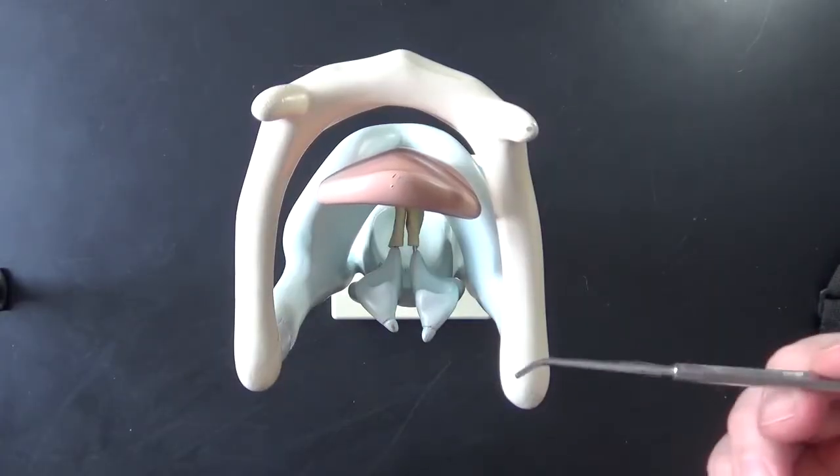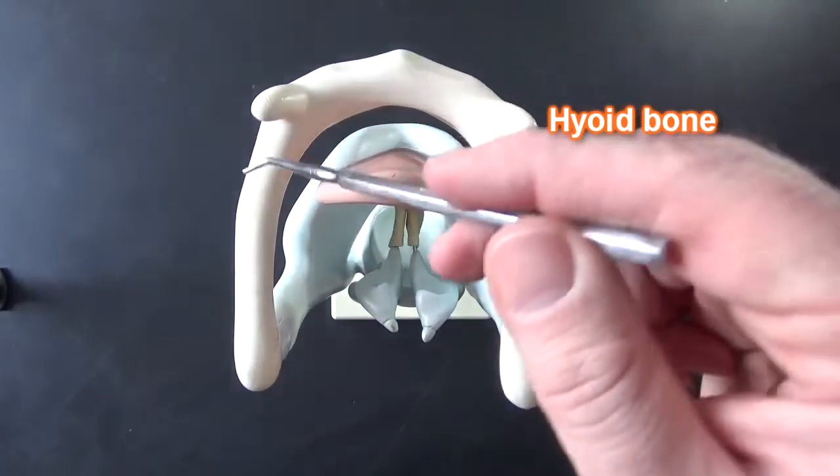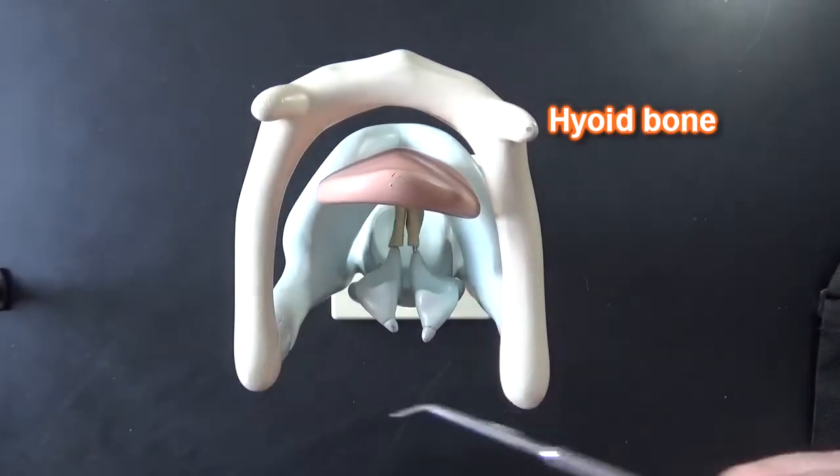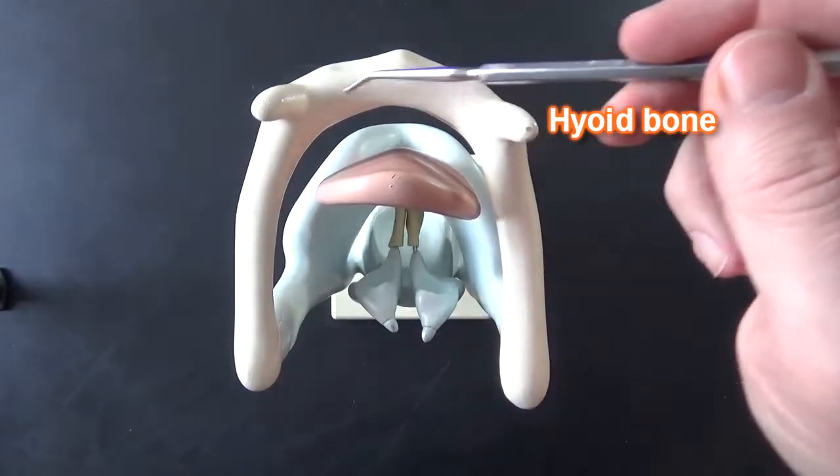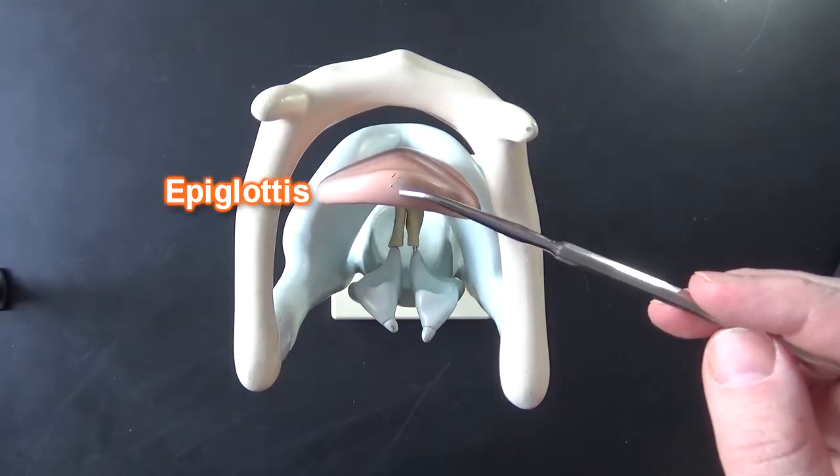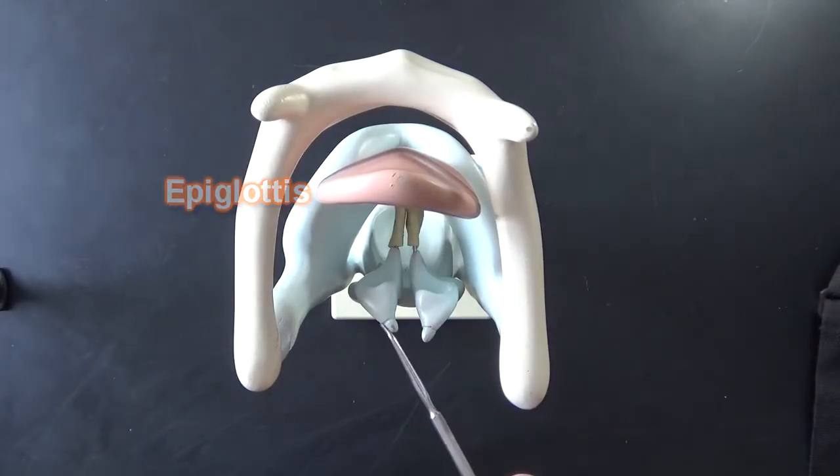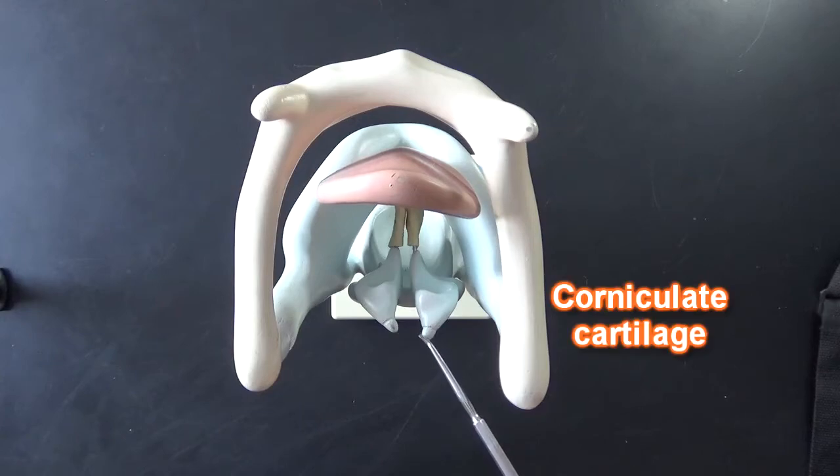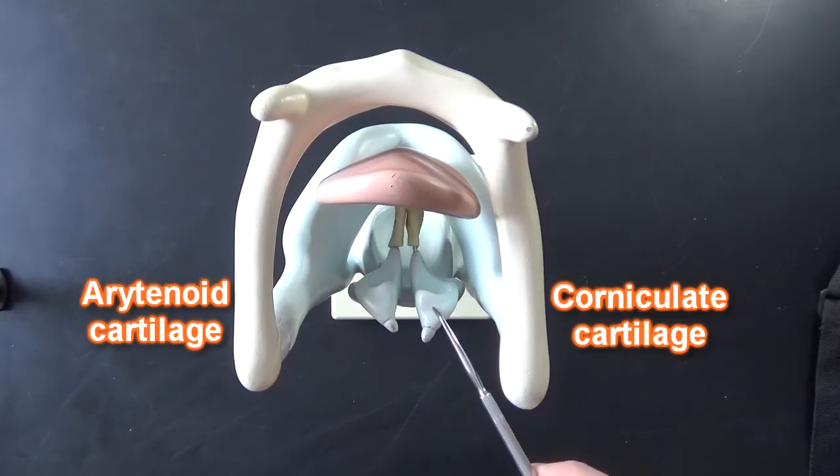If we look inside here we can see the hyoid bone up here. We've got the greater cornu and the lesser cornu and the body of the hyoid bone. This is the epiglottis right here and we can see the top of the corniculate cartilages and the arytenoid cartilages.